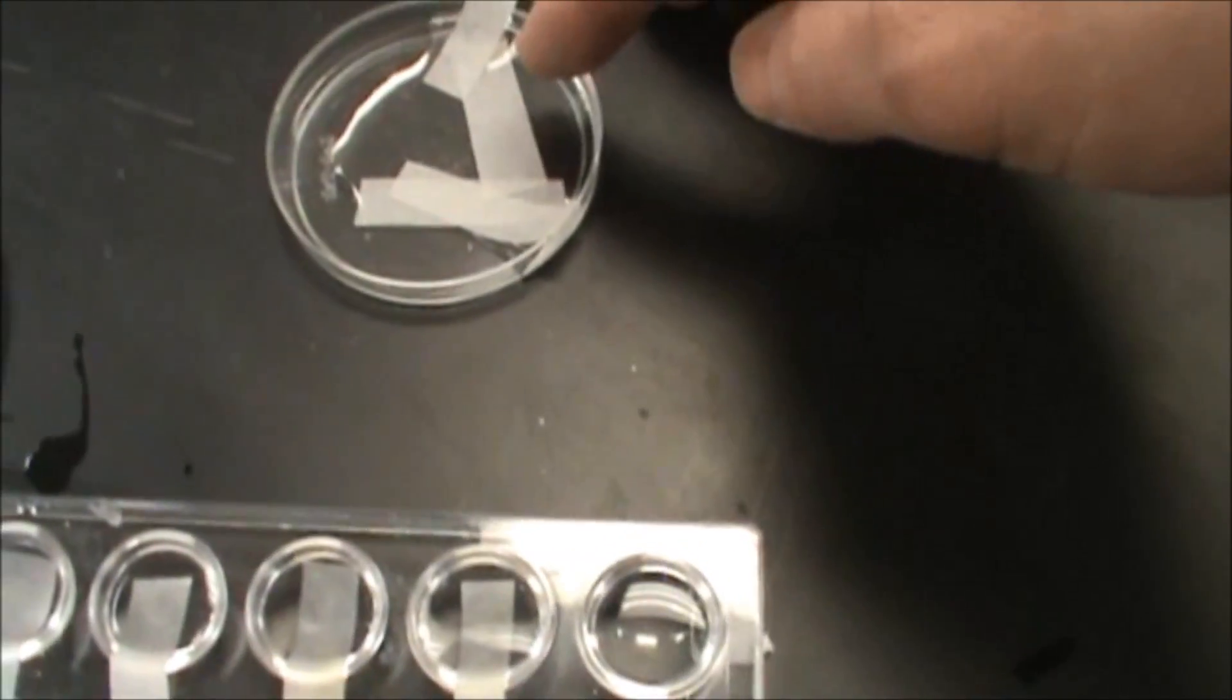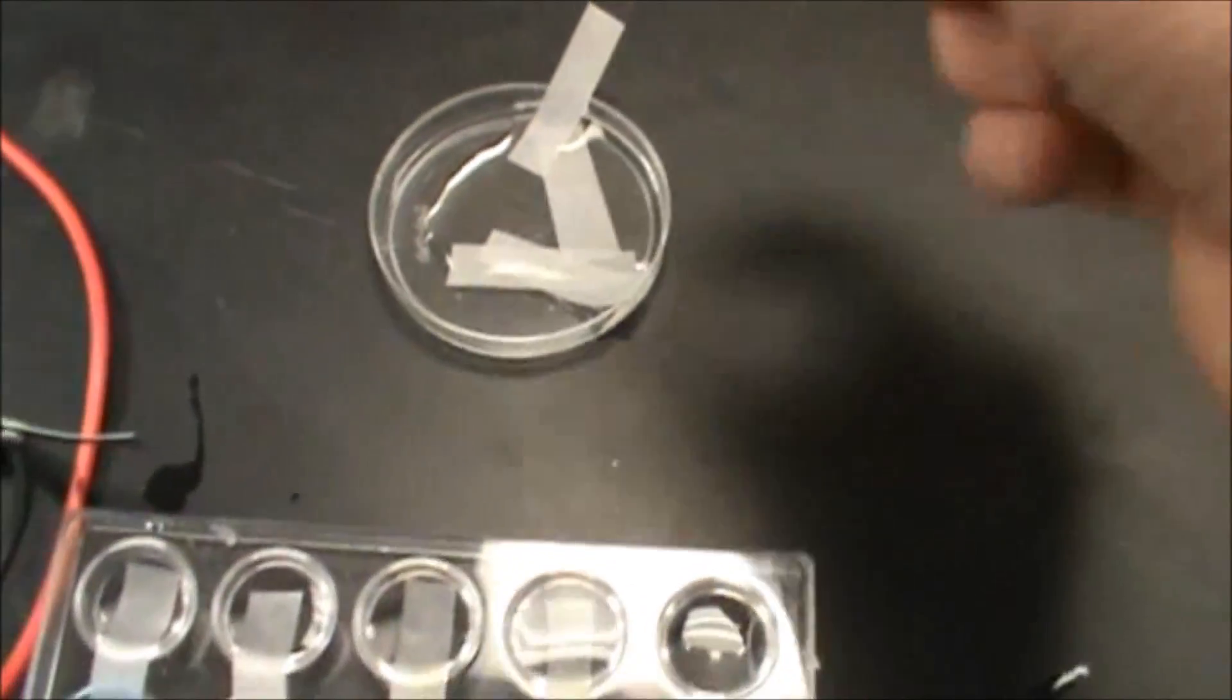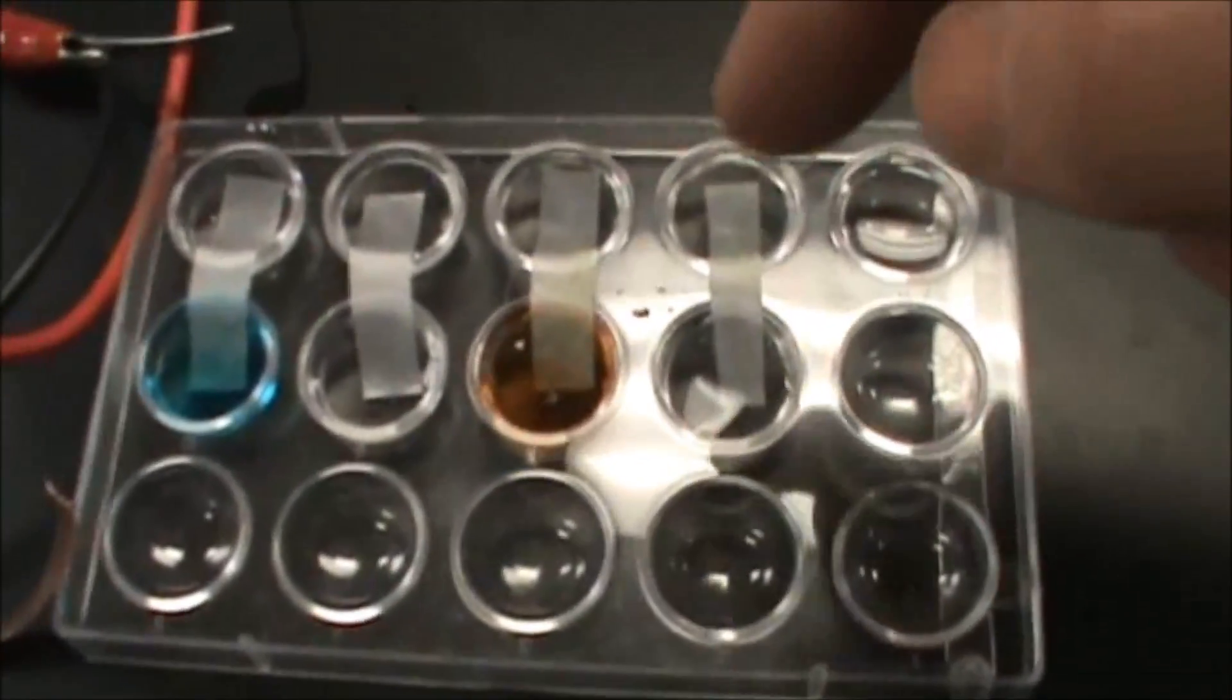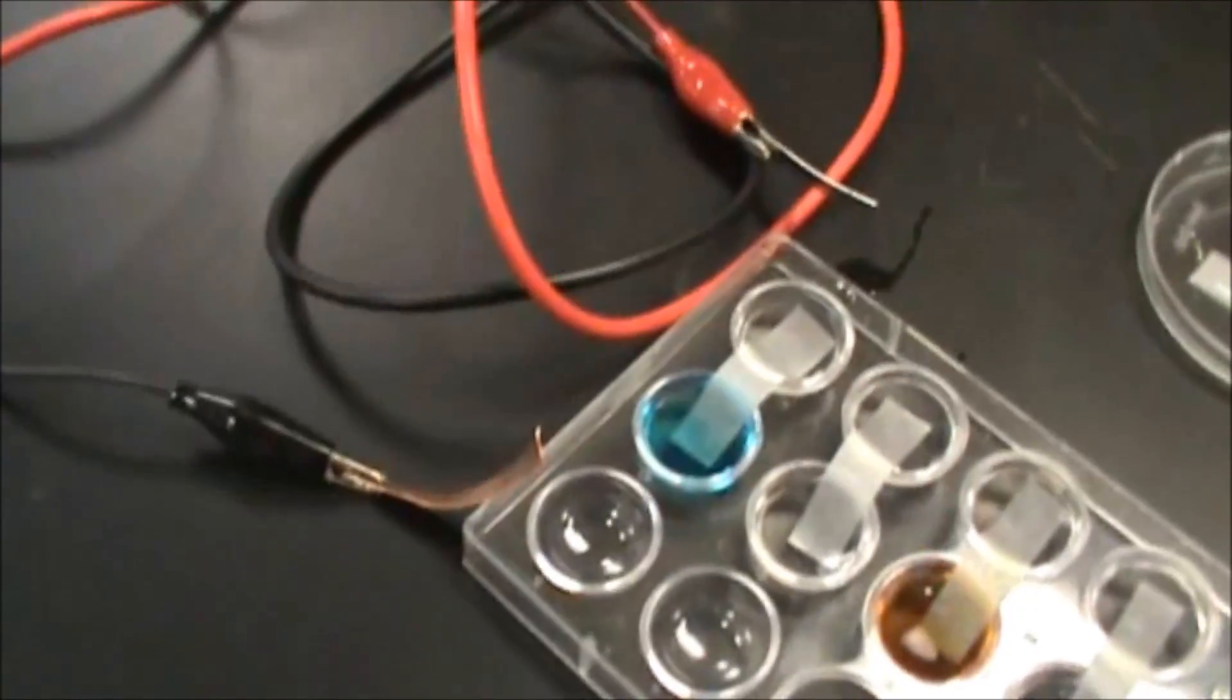In here we have some potassium nitrate solution that's soaking into some chromatography paper, and those are serving as our salt bridge between the two. And then over here we have our voltmeter, and the voltmeter will hook up to the various leads.